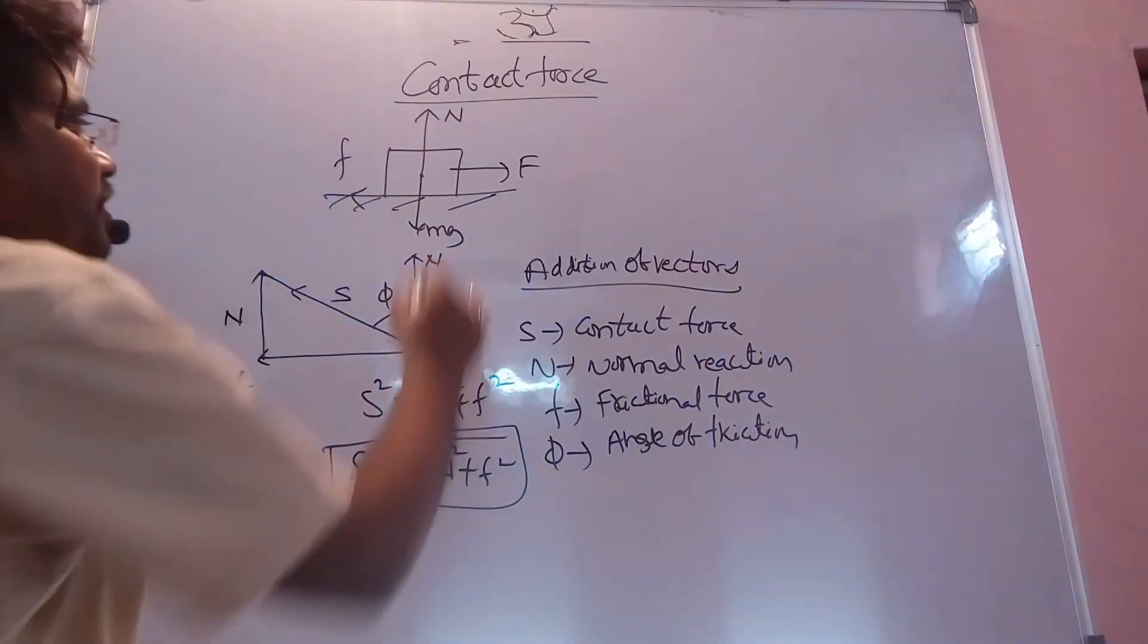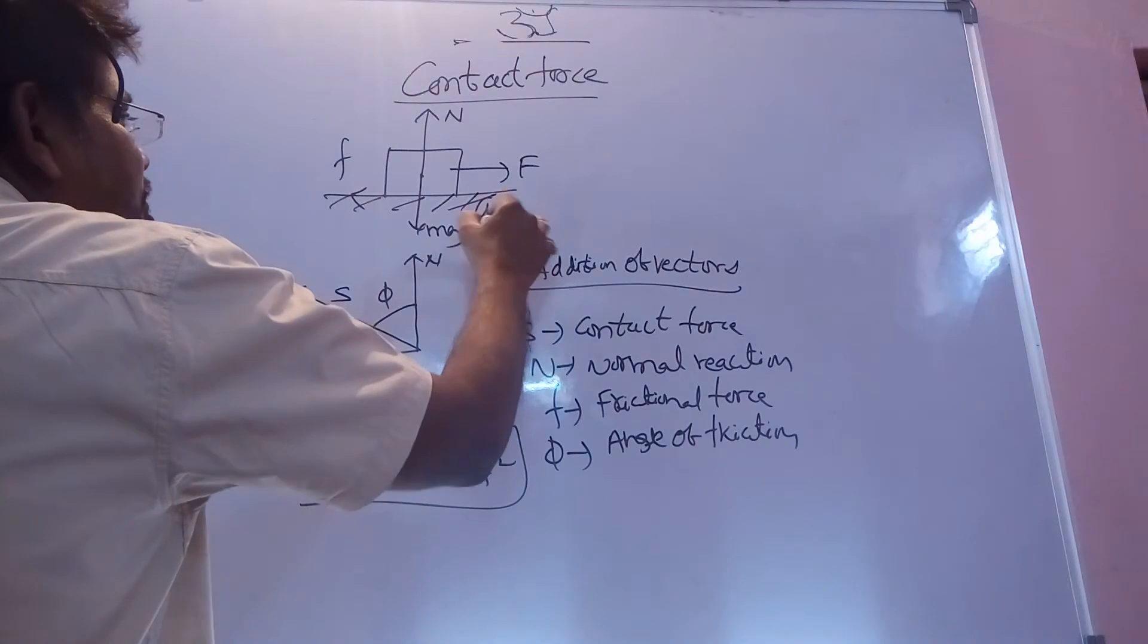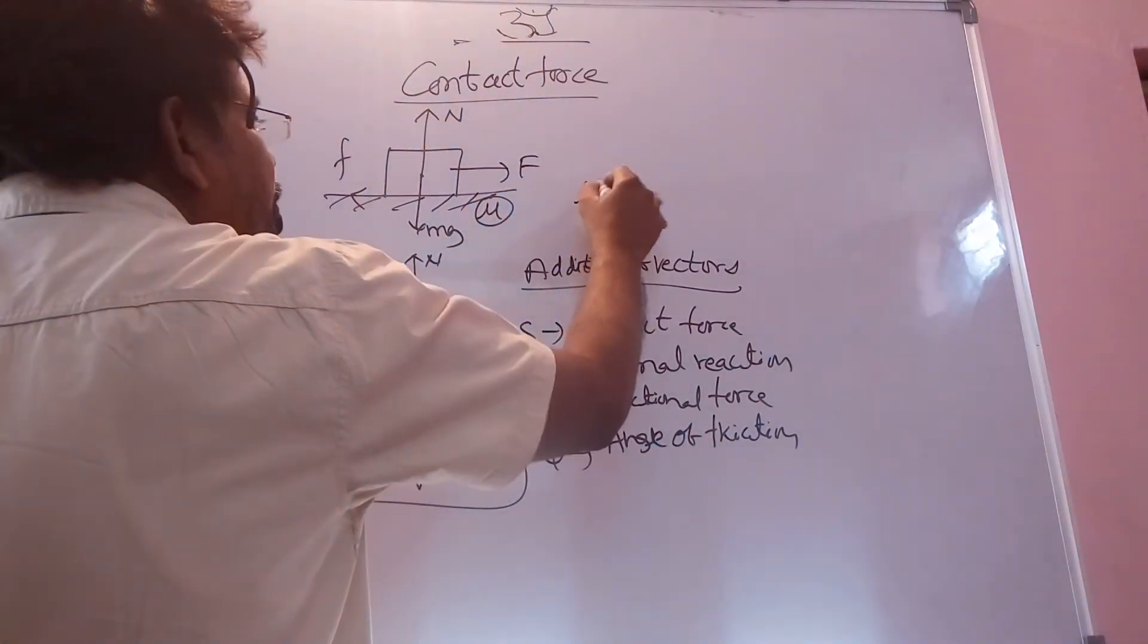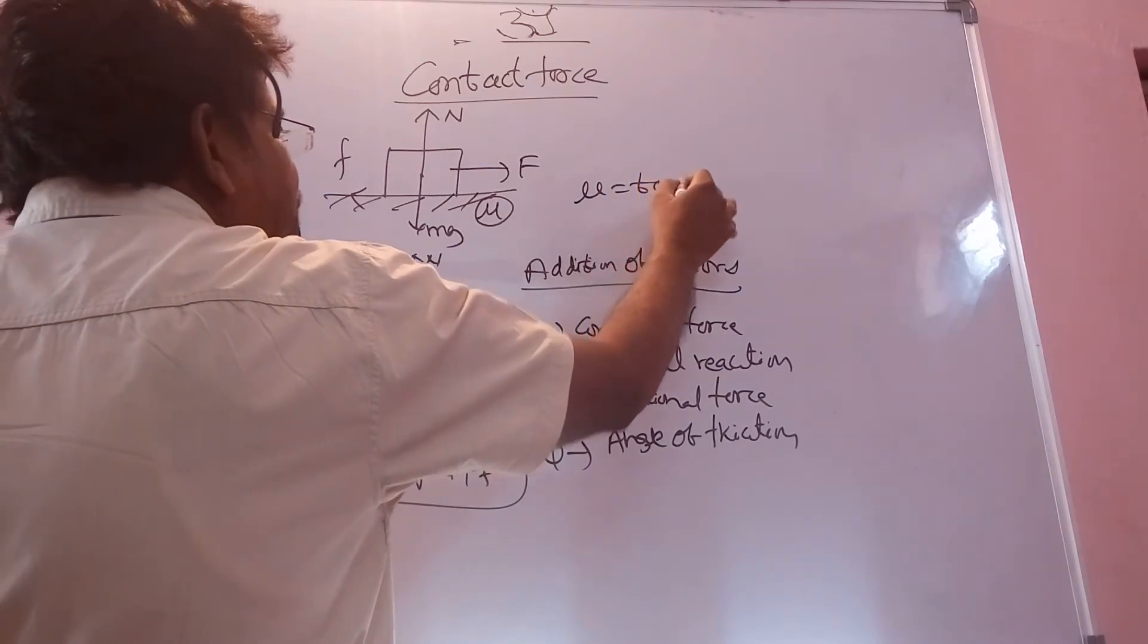So if this is one rough surface, it must be having some coefficient of friction. If we know angle of friction π, then μ equals tan π.